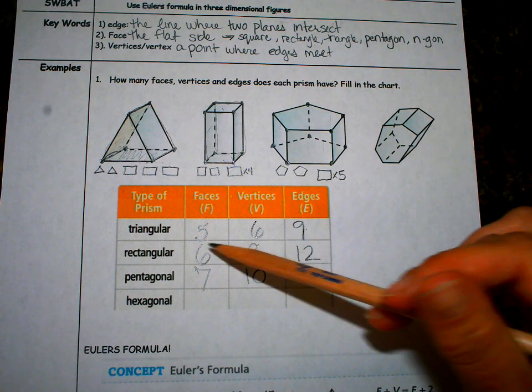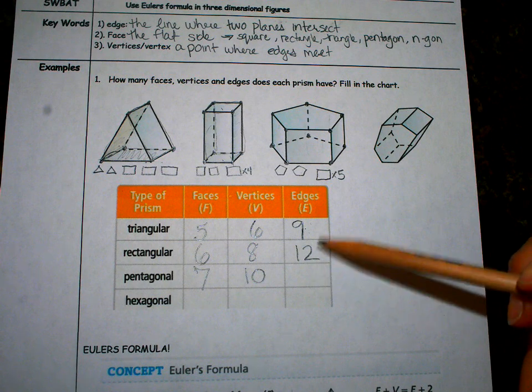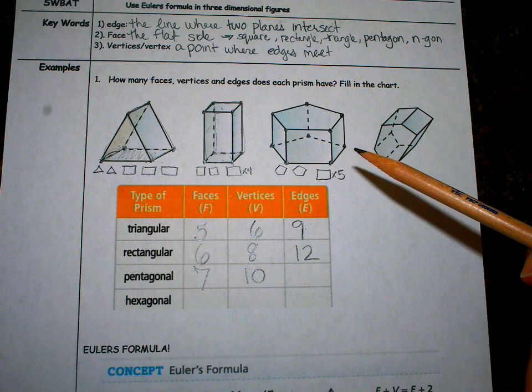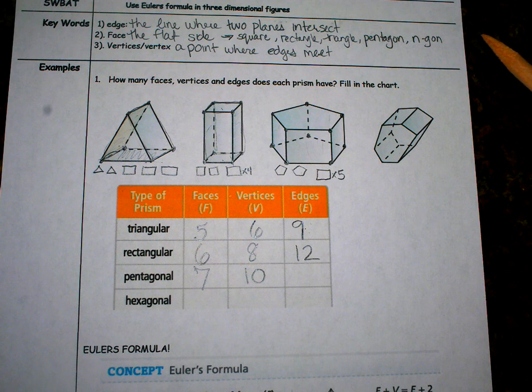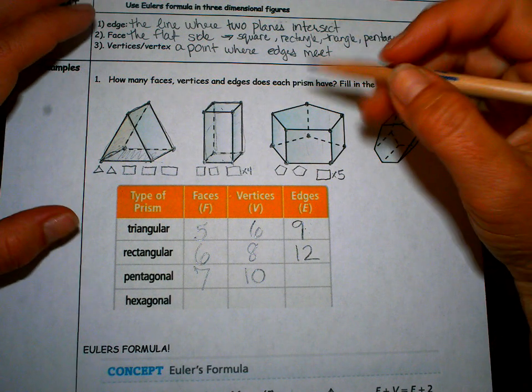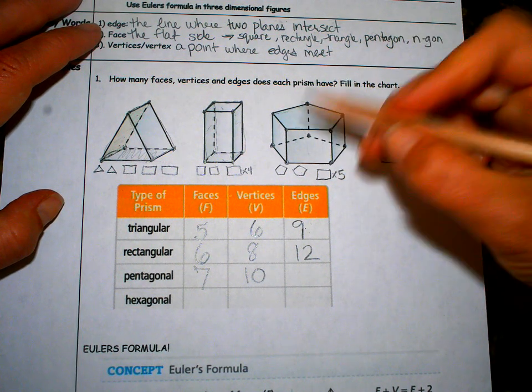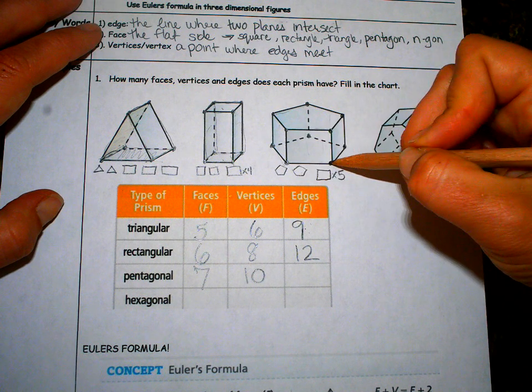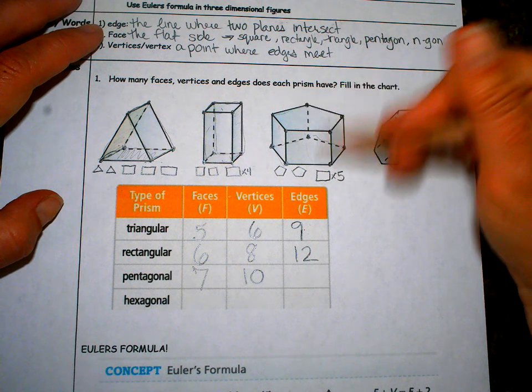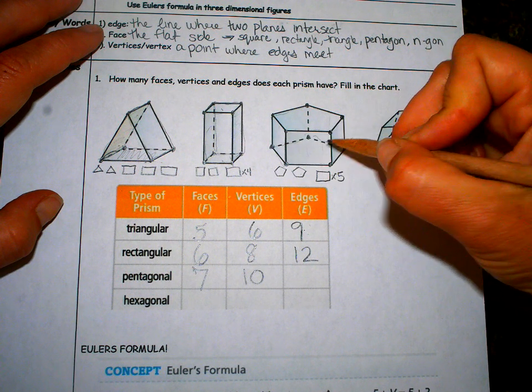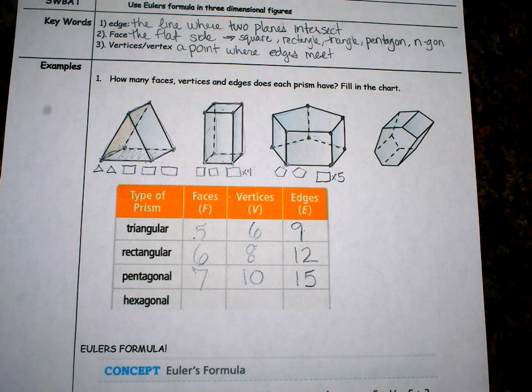Now the pattern that we've done so far is that the faces, vertex, edges, like they all go in order from least to greatest. And the edges is always the biggest number. So that's going to happen again here. An edge is going to be a line where the two planes connect. So I'm going to count them all up and I have to be very careful not to miss any. There's five on top, top pentagon, one, two, three, four, five, bottom pentagon, six, seven, eight, nine, 10. Now I need to go up and down. How many are there that go up and down? 11, 12, 13, 14, 15.